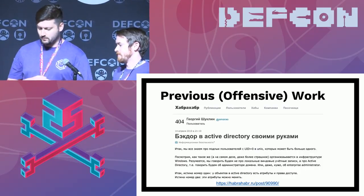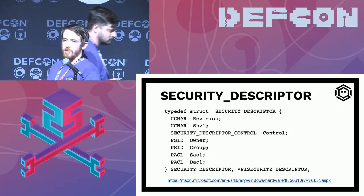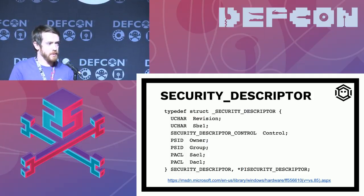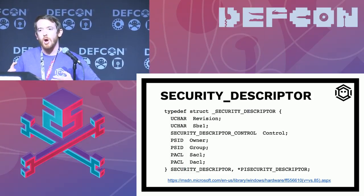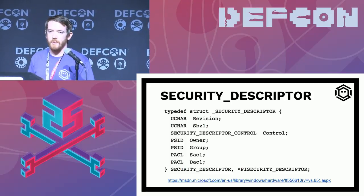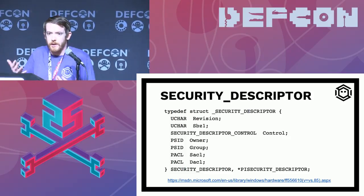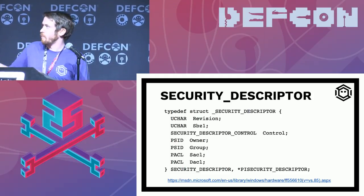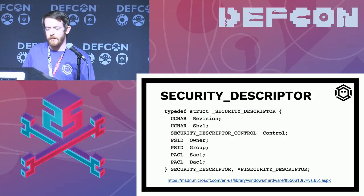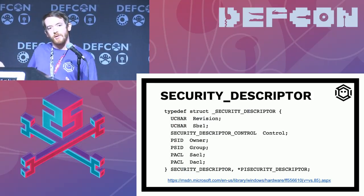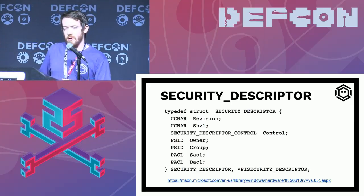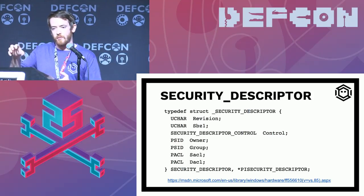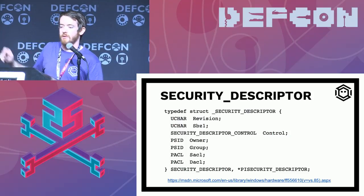We'll go into some technical background. A securable object in Windows is defined as an object that has a security descriptor. This is the binary structure — there are header bits and other components. All of this can be expressed as an SDDL — a Security Descriptor Definition Language string. The pieces we care about are the owner SID for a particular object, and the DACL — the pointer to the discretionary access control list.